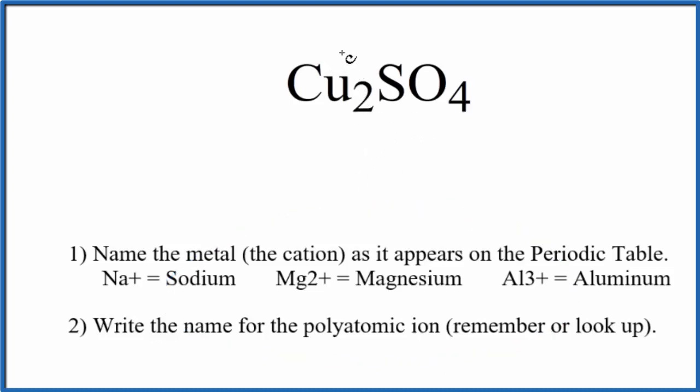So let's first start by writing the name of the metal. Cu is copper and then SO4, one to remember, is the sulfate ion, lowercase s, and at this point Cu2SO4, the name we have is copper sulfate.